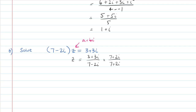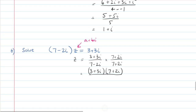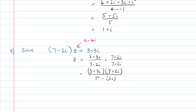We multiply by the conjugate divided by itself, because that's like multiplying by 1, so we haven't changed the equation. We get 3 plus 3i times 7 plus 2i over 7 squared minus 2i squared. That gives us 21 plus 21i, plus 6i, plus 6i squared on top. The bottom gives 49 minus 4i squared, which is 49 plus 4, so that's 53.